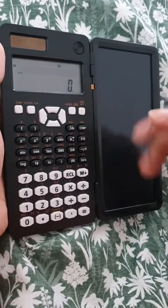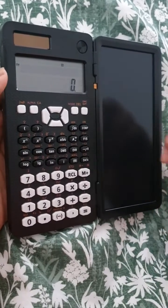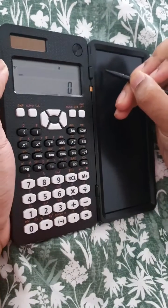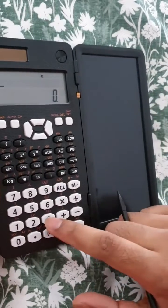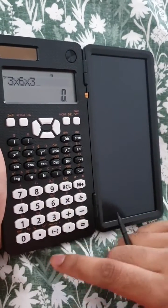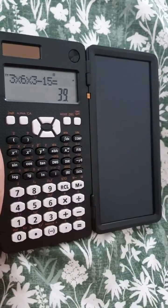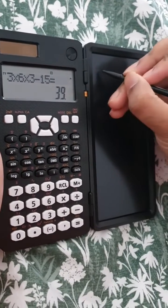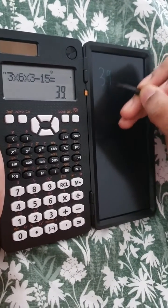You can use the sides for questions or notes. For example, let's imagine you calculate, say, three times some numbers. Let's imagine you got this answer—you write 39 up here and it keeps it saved.